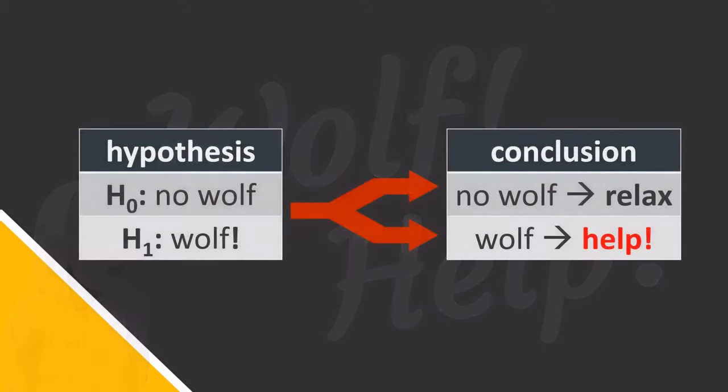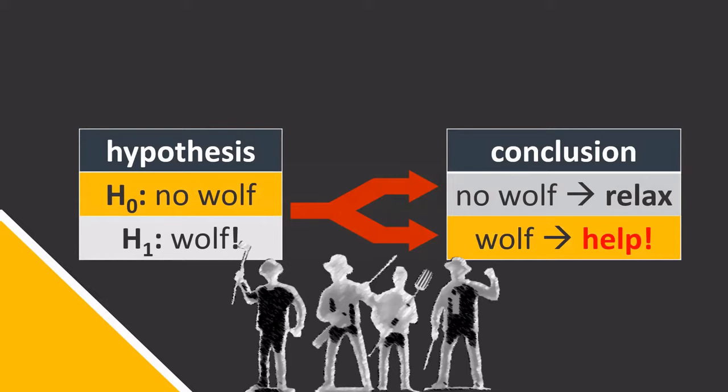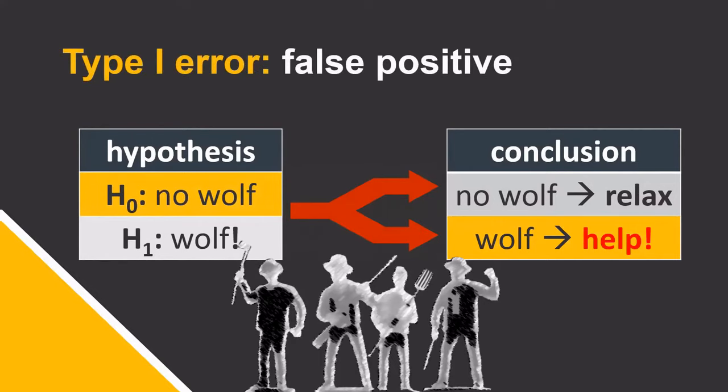And so, despite the null hypothesis being true, the villagers observe the boy's screams and rush to help. They made their first error, a type 1 error, in which they had falsely rejected a true null hypothesis, also known as a false positive.